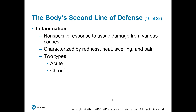So we talked about the first line of defense — skin and mucous membranes — and some of the chemicals and cells there that can help prevent invasion. For the second line of defense, we talked about leukocytes, phagocytosis, and some chemicals. There are some other processes that are part of the second line of defense.